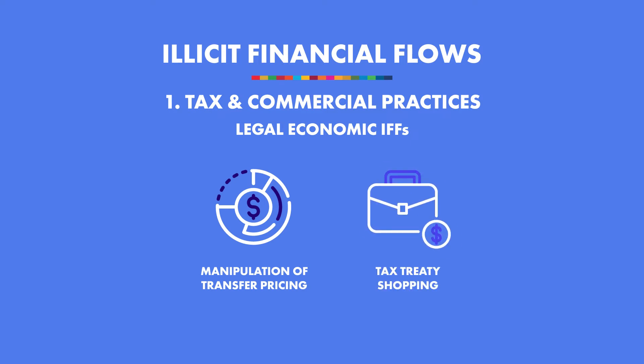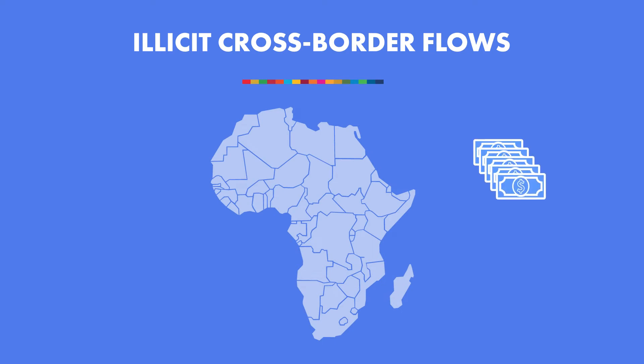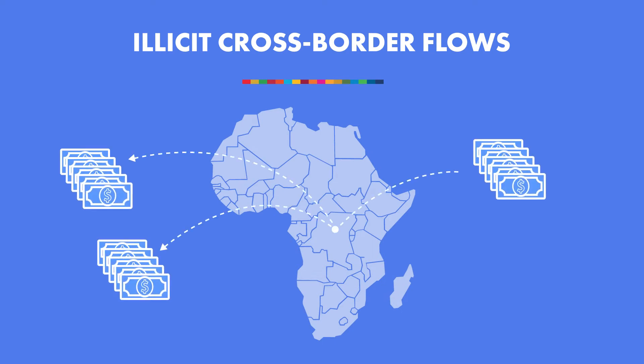Only the illicit parts of cross-border flows fall within the scope of IFFs. Specifically in the tax and commercial practices, we look at three main types: trade misinvoicing, profit shifting of multinational enterprises, and flows of undeclared offshore wealth and tax evasion by individuals.